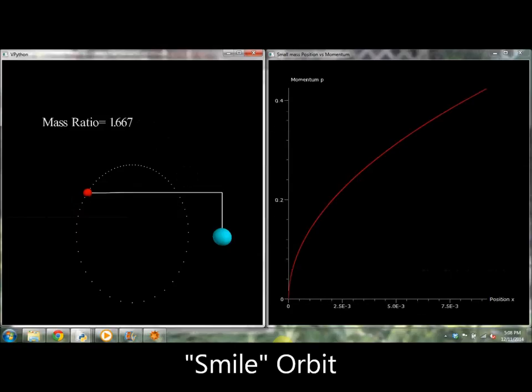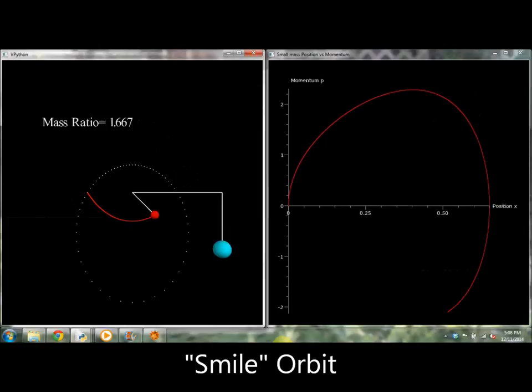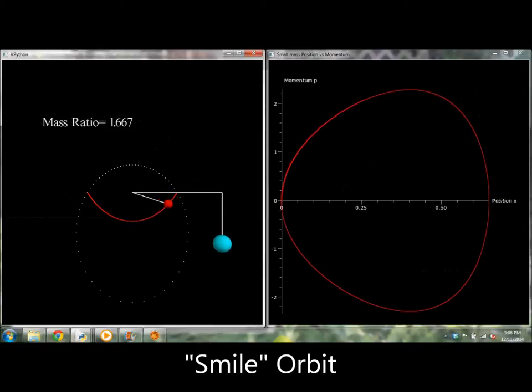Now we will take a look at a few examples of periodic orbits. Unfortunately, due to the complexity of the math, we cannot actually solve for these orbits. But what we can do is let a computer run through hundreds of mass ratios until we hit upon the orbits that we're looking for. The most simple of these is called the smile orbit, and this is shown here.